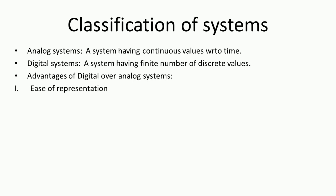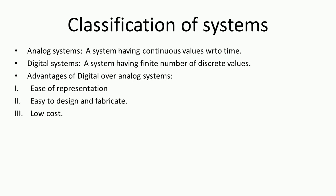There are certain advantages of using digital systems over analog. First is ease of representation — it is quite easy to represent digital systems because of only two levels, zero or one, whereas analog systems have values ranging from minus to plus infinity. Second, it is quite easy to design and fabricate: once you model a particular system, it can be replicated on a larger scale. Third is low cost.